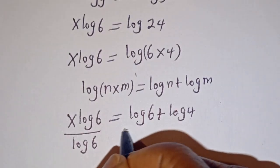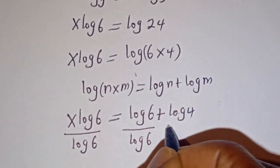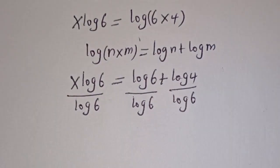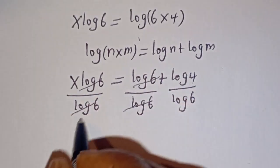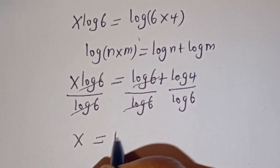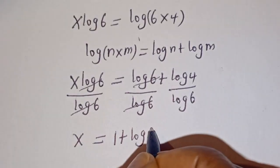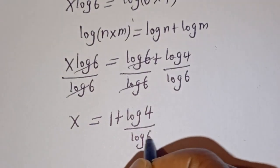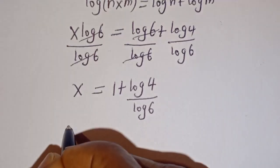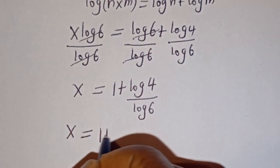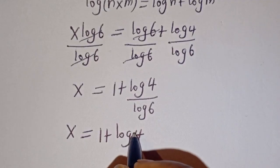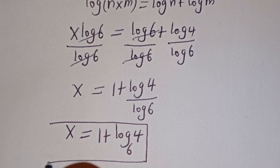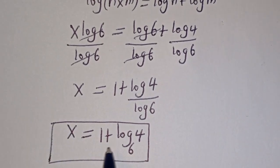This is divided by log 6, and this is divided by log 6, and this is divided by log 6. This will cancel, and x is equal to 1 plus log 4 divided by log 6. This is the value of s from the first method. We can check to confirm if this first method is right or wrong.